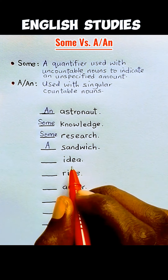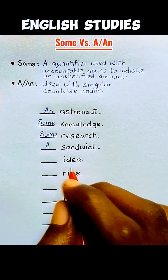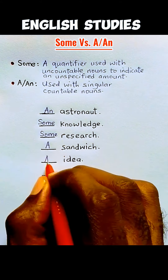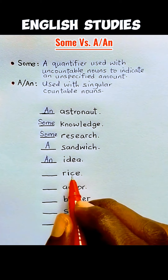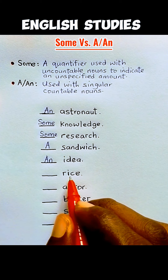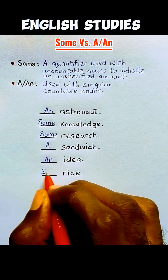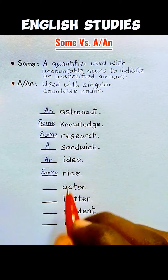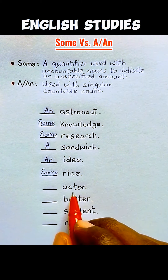'Idea' is a singular countable noun and it begins with a vowel sound, so we use 'an' — an idea. 'Rice' is an uncountable noun, so we use 'some' to quantify it — some rice.